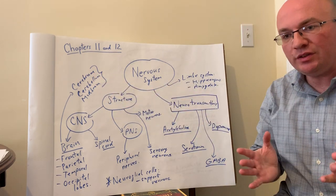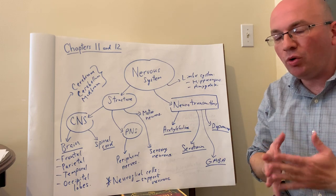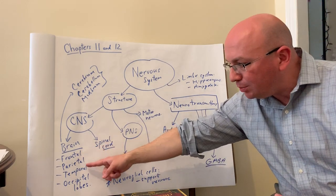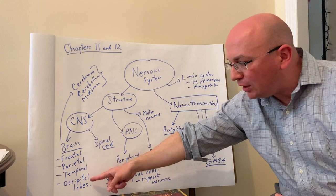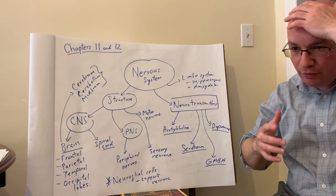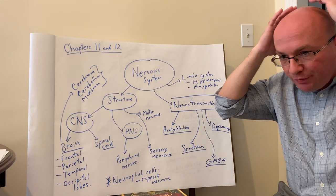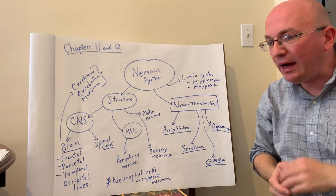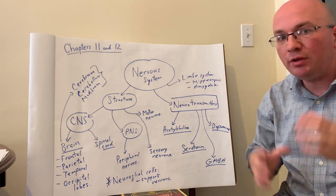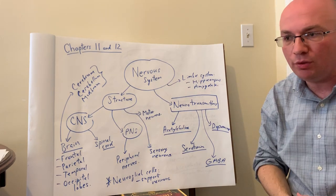When you separate the cerebrum into different parts, we call these lobes: frontal lobe, parietal lobes, temporal lobes, and occipital lobes. Frontal lobes are in the front, parietal is the upper and sort of back portion, all the way in the back is the occipital lobe, and on the sides are the temporal lobes.